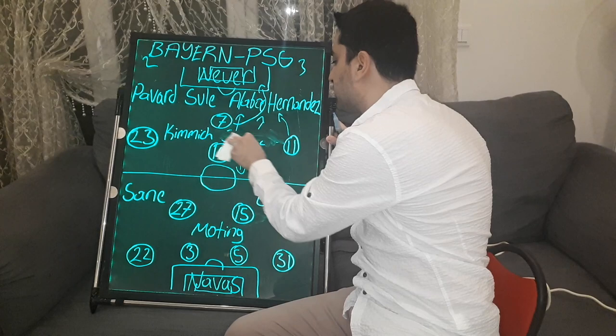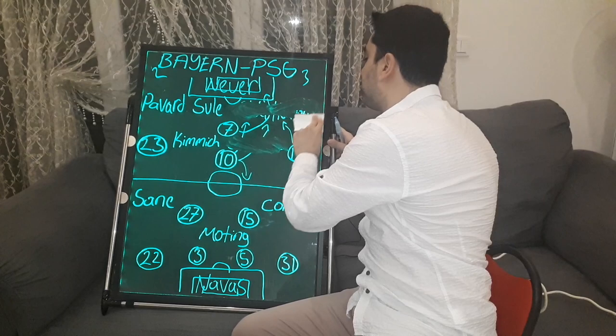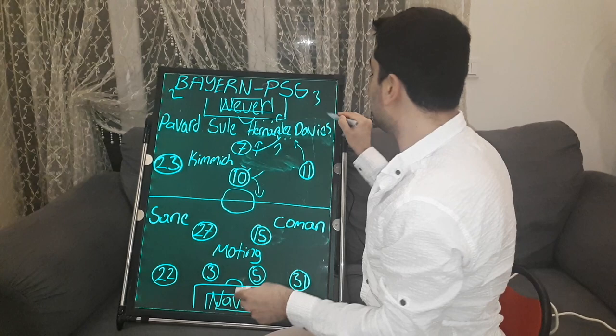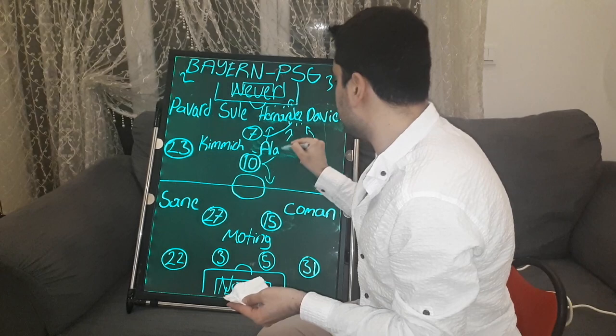After this substitution, Hernandez played in the center of the defense, and Davies played as left-back. Hansi Flick also pulled Alaba into the center of midfield in the pivot position, playing alongside Kimmich in front of the defense.